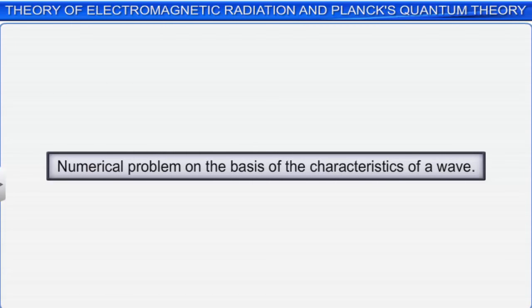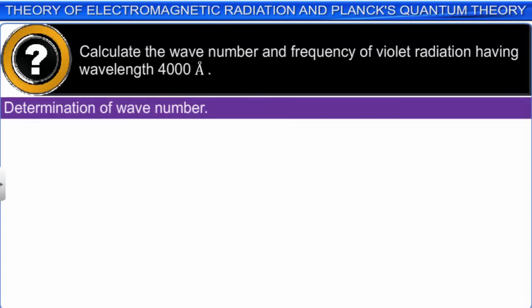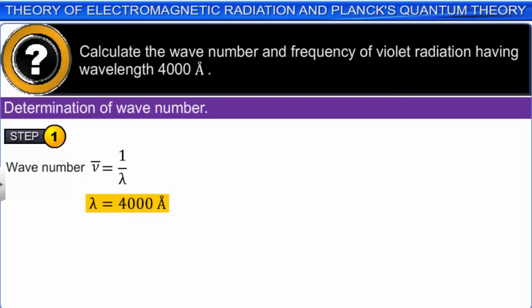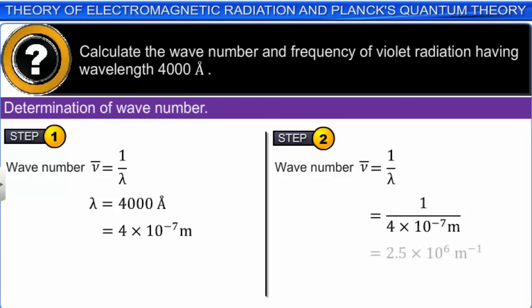Let us solve a numerical problem on the characteristics of a wave. Calculate the wave number and frequency of violet radiation having wavelength 4000 angstrom. First, to calculate wave number: nu bar = 1/lambda. The given lambda is 4000 angstroms, which equals 4 × 10⁻⁷ meters. On substituting, nu bar = 2.5 × 10⁶ per meter, or 2.5 × 10⁴ per centimeter.